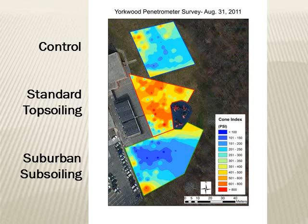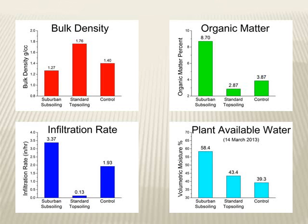We see this pattern in other soil properties too. Here I'm comparing long-term median values for bulk density, organic matter, and infiltration. We also see the mean soil moisture value from each field for a single survey event in March, which we're interpreting as the moisture available for the plants and turf. From left to right, each plot shows suburban subsoiling, standard topsoiling, and our reference control field. Our treatment resulted in lower bulk density, higher organic matter, the highest infiltration, and the highest level of plant-available water in the soil profile. Whereas the standard topsoiling showed dense soil with low infiltration, low organic matter, and not nearly as much water available for the turf.